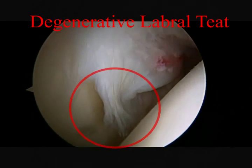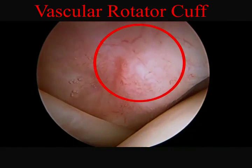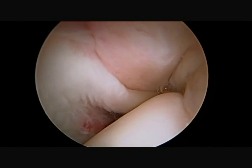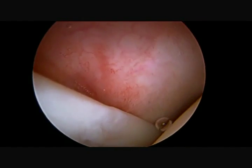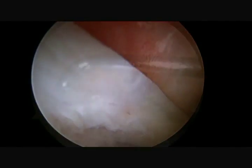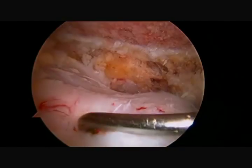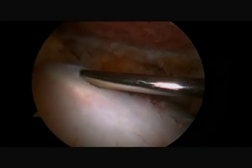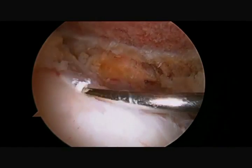The arthroscope is introduced into the shoulder and after a systematic exam is completed, a small degenerative type of labral tear is identified and treated. The undersurface of the rotator cuff is visualized and shows a hyperemic and vascular rotator cuff with a large number of small blood vessels visible. This appearance, as seen here, is classically associated with calcific tendonitis. Upon completion of the intra-articular portion of the procedure,